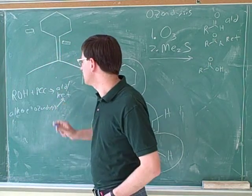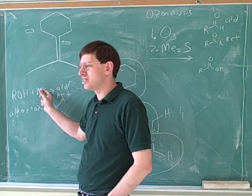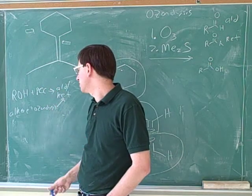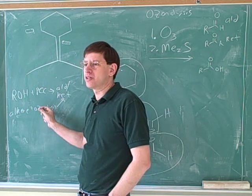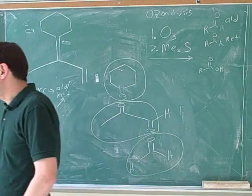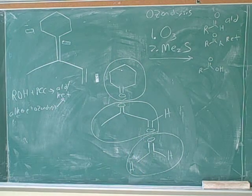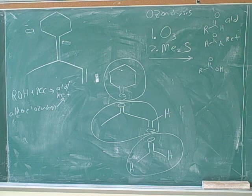So now we have two ways to make aldehydes and ketones: an alcohol plus PCC, or an alkene plus ozonolysis. Just to review, what type of functional group does PCC operate on? Alcohol.